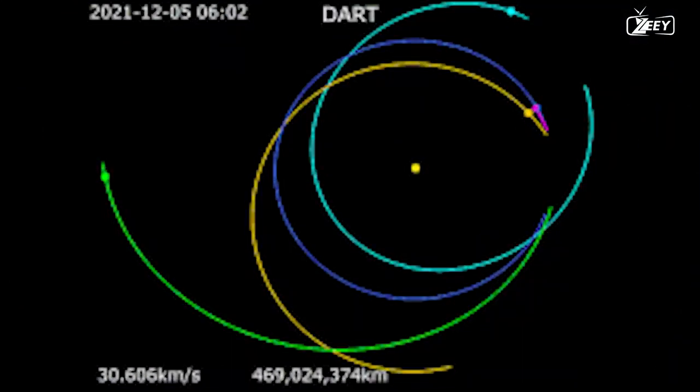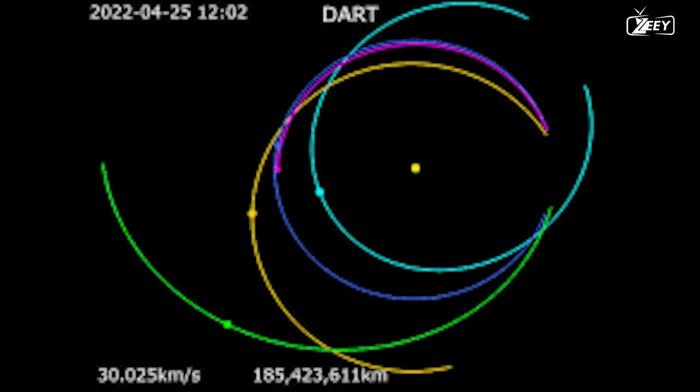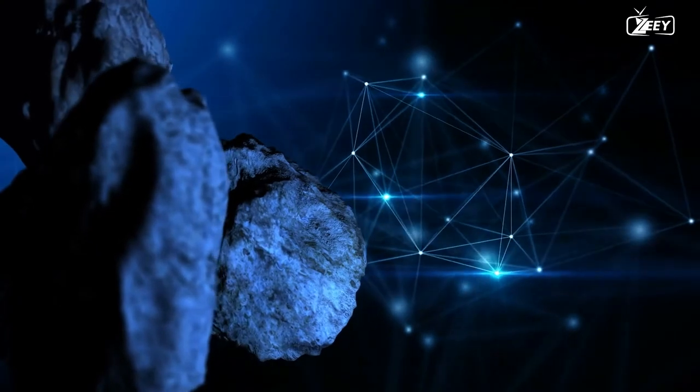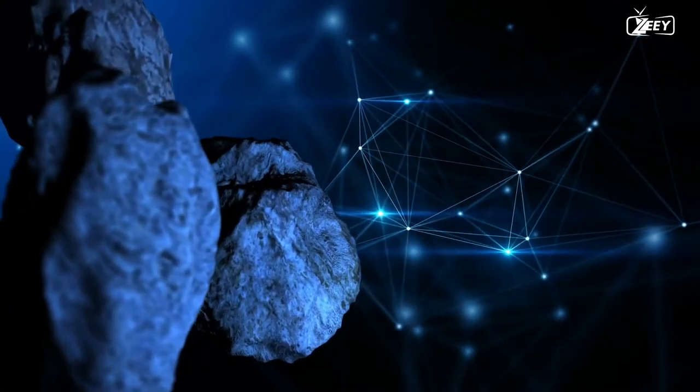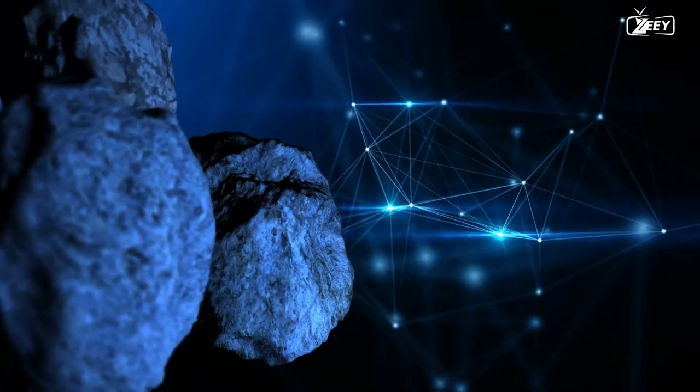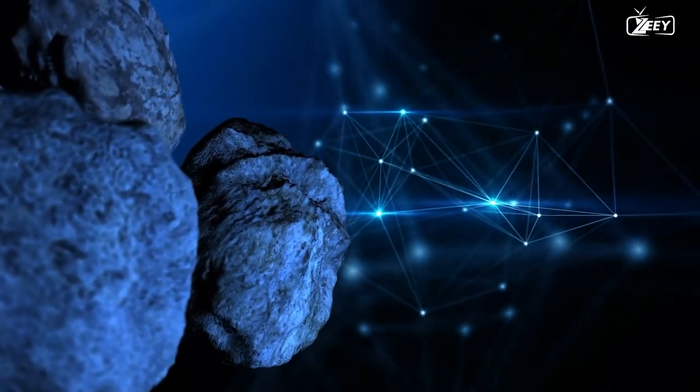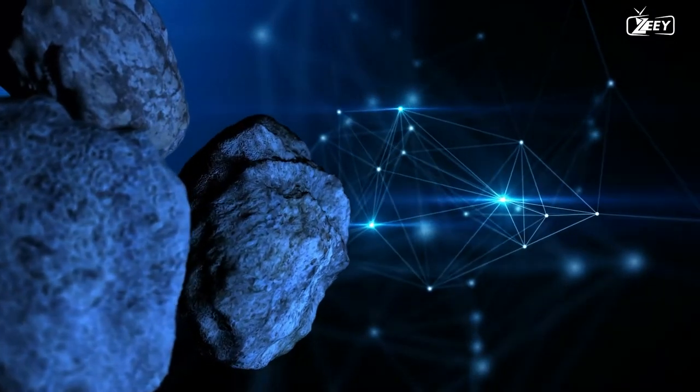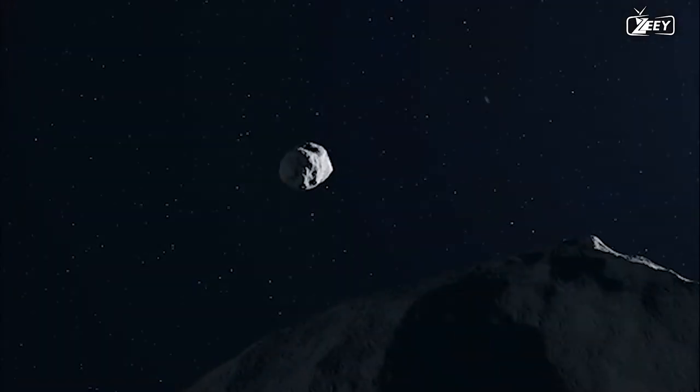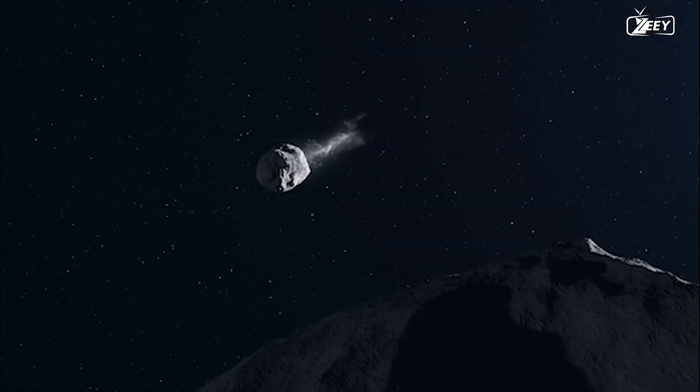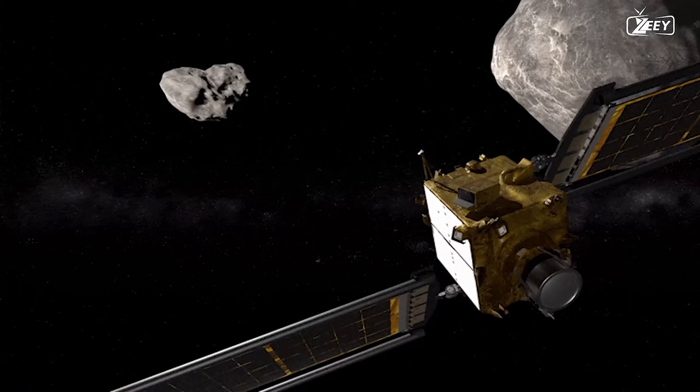For the first time, Webb and Hubble were employed to study the same astronomical target concurrently, yielding original photographs from NASA's Double Asteroid Redirection Test DART project. In the Didymos Double Asteroid System, on September 27, 2022, at 1:14 Central European summer time, DART purposefully collided with the asteroid Dimorphos' tiny moon. It was the first time an asteroid has ever been deflected by altering its orbit via kinetic impact by a spacecraft.